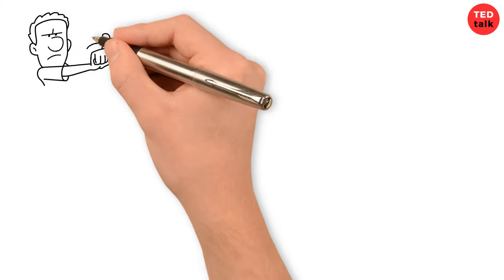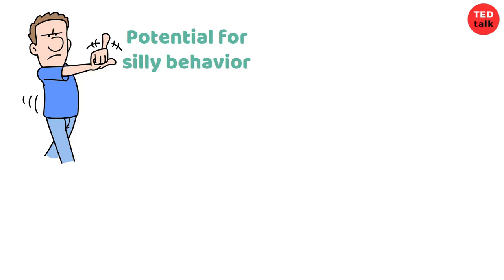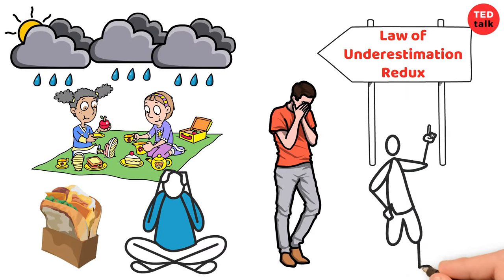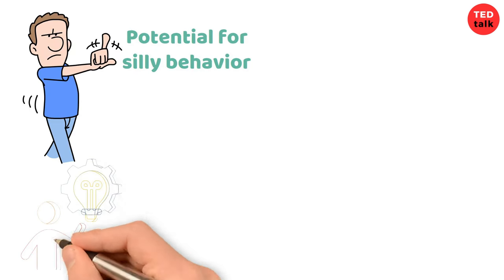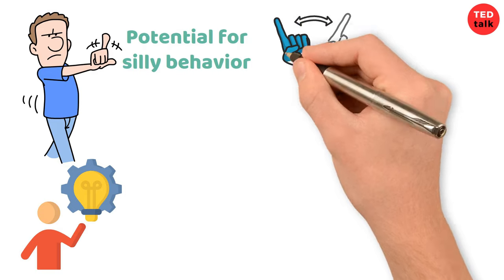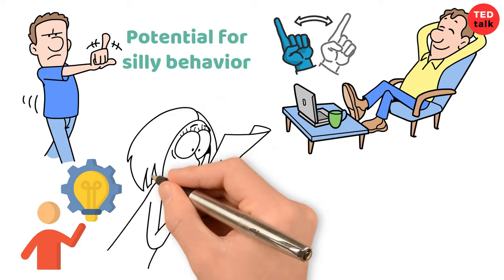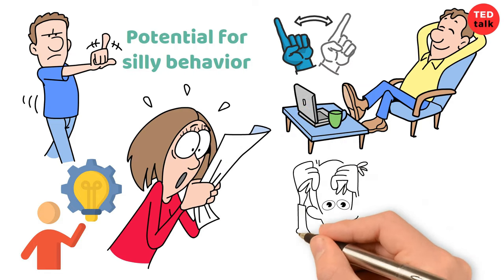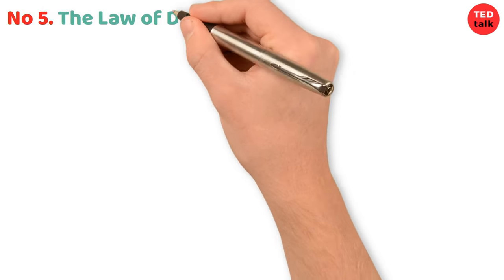That's the law of underestimation redux: thinking everything will be fine until reality proves us wrong. So the next time you're tempted to underestimate the potential for silly behavior, remember Cipolla's law of underestimation redux. It's like a wake-up call to stay vigilant and not let our guard down, even when things seem to be going smoothly. After all, life is full of surprises, and sometimes the most unexpected moments are the ones that teach us the most.